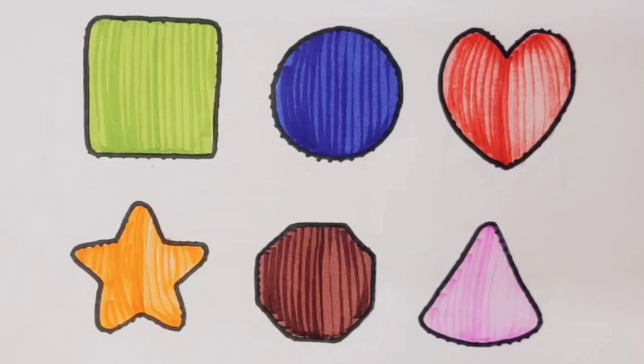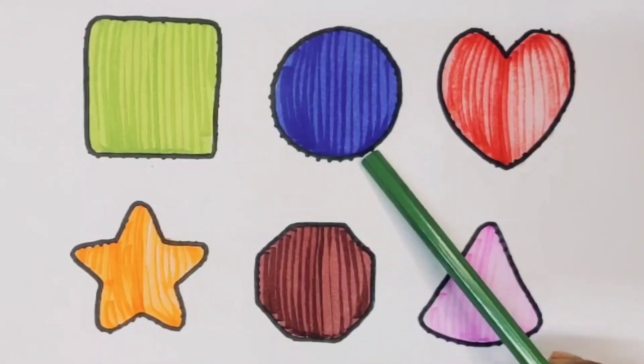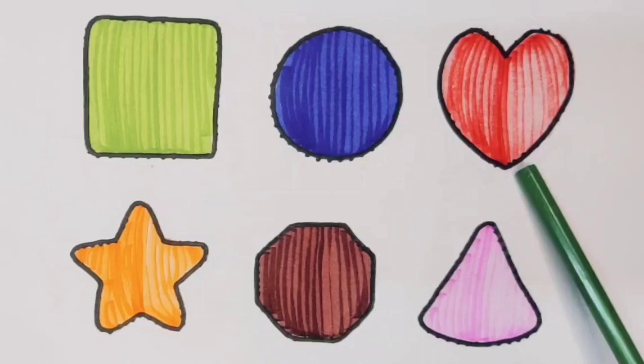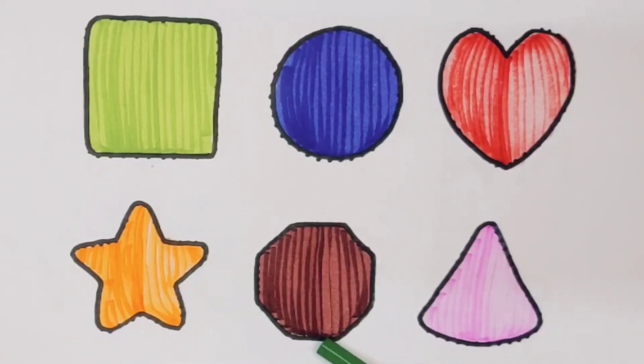What we learned: green color square, blue color circle, red color heart, orange color star, chocolate color decagon, pink color triangle.